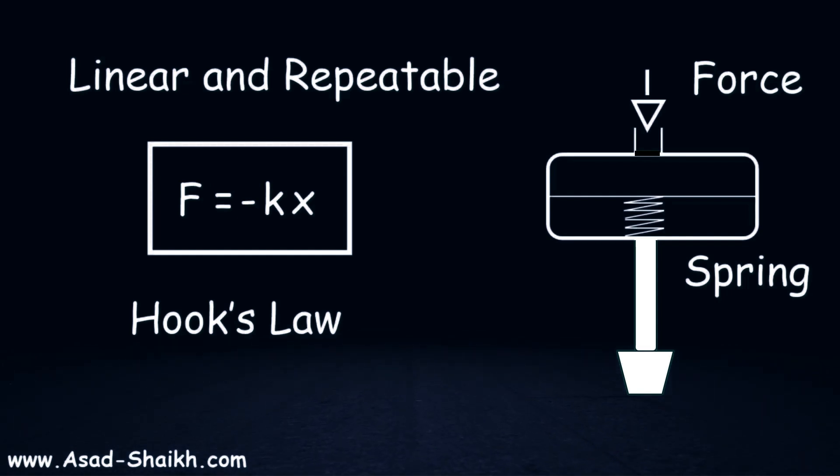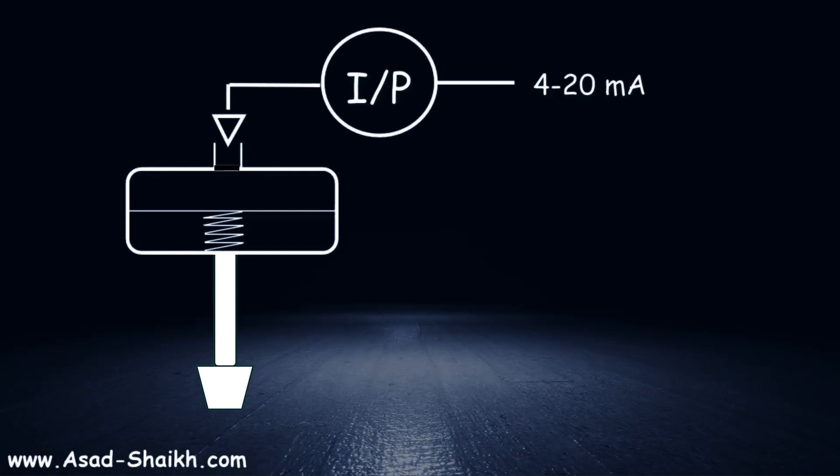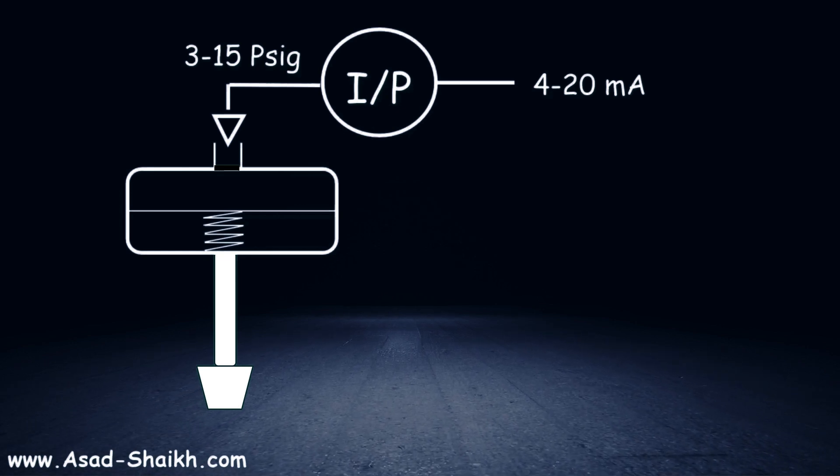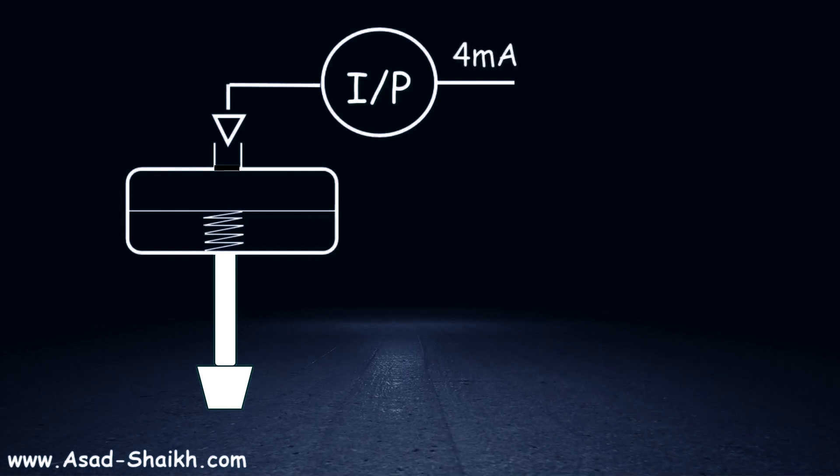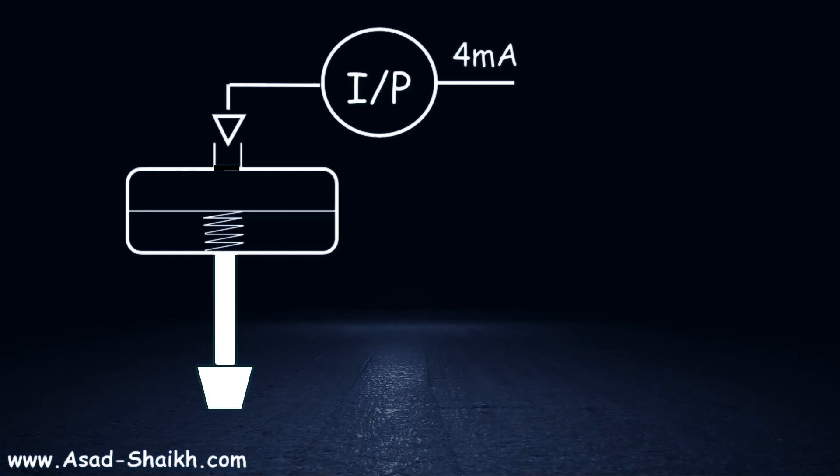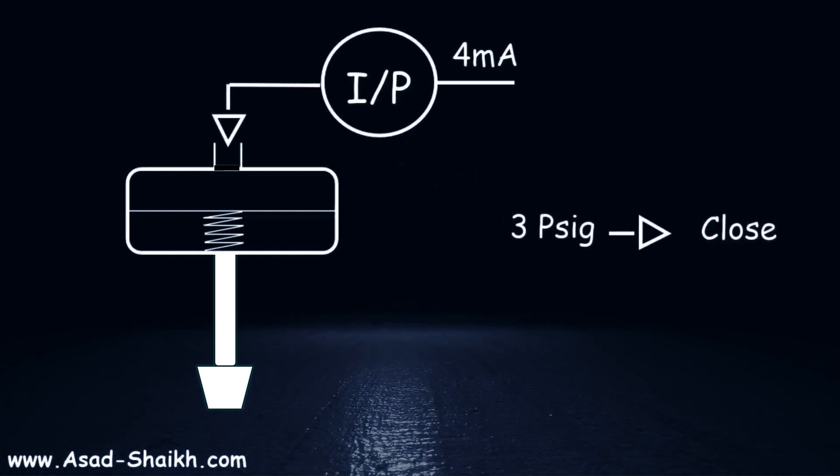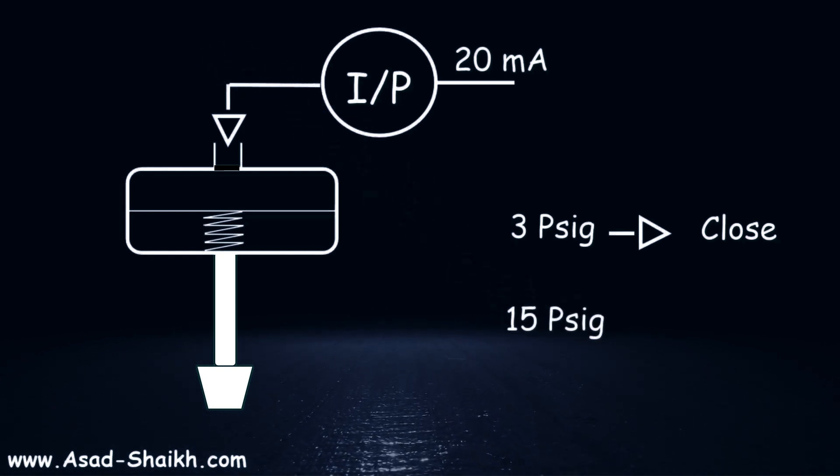When we hook it to an I/P converter, imagine the 4 to 20 milliampere signal that is coming from your control system can be calibrated to 3 to 15 psig, which will then be useful for you to control the valve. For example, if the control system signal is 4 milliampere, the I/P converter will convert it into 3 psig, which is the valve closed position. Then you get 20 milliampere from the control system, and the I/P converter would convert to 15 psig, which will be equal to the valve's open position.